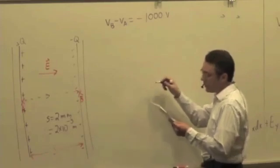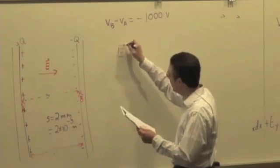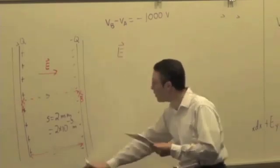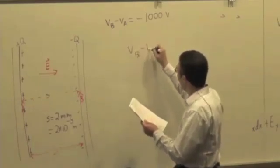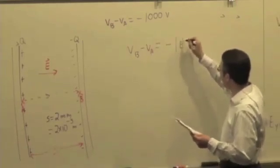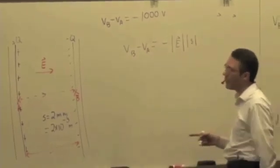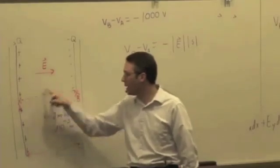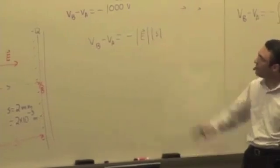So if I know the distance S and I know the potential difference, I can say that the electric field, let's do it this way, VB minus VA is going to be the negative of the magnitude of that electric field times the magnitude of that distance times the cosine of 0, right? Because we're going in the direction of the path, cosine of 0 is 1, so that's the result.